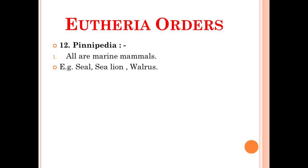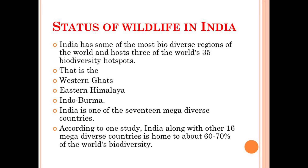The last order under the Eutheria is Pinnipedia, and all the animals belonging to this order are basically marine mammals. For example, you can note down the seal, sea lion, and walrus.